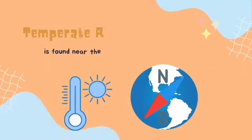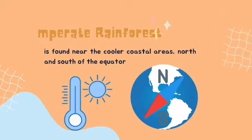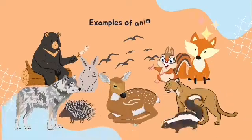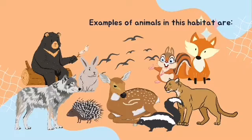A temperate rainforest is found near the cooler coastal areas north and south of the equator. Examples of animals in this habitat are black bears, mountain lions, deer, fox, squirrels, skunks, rabbits, porcupines, wolves, and a number of birds.